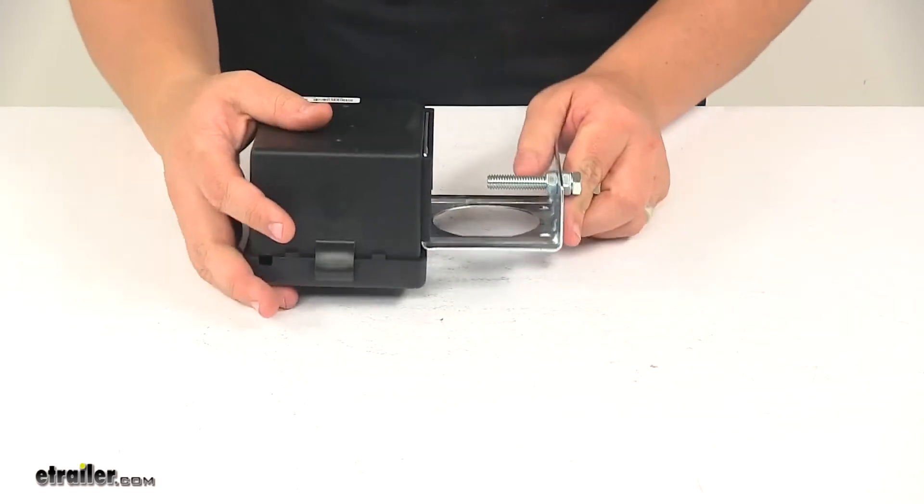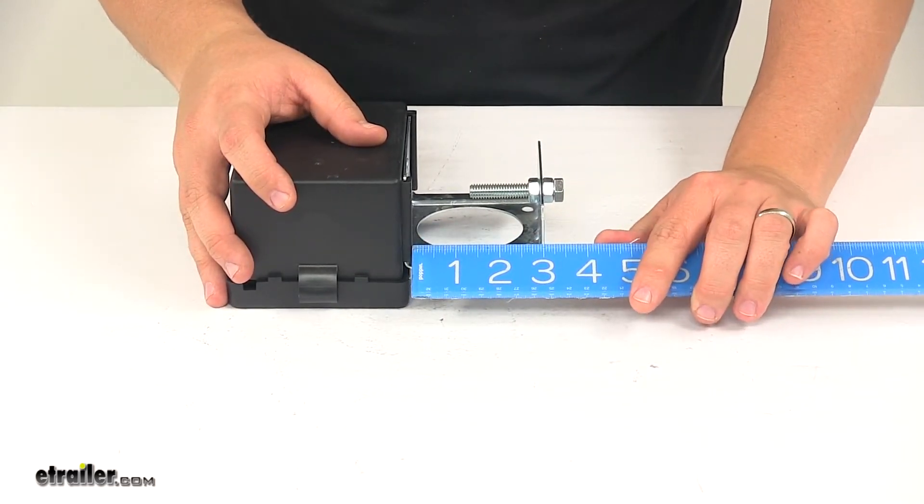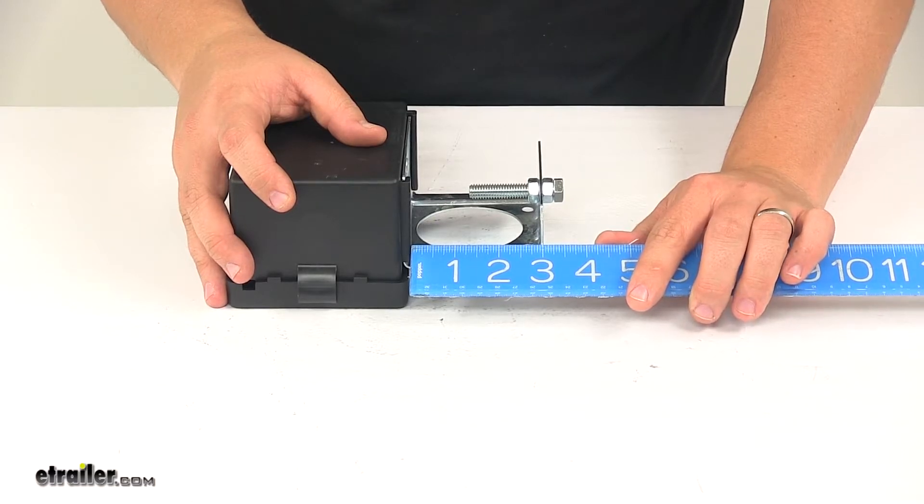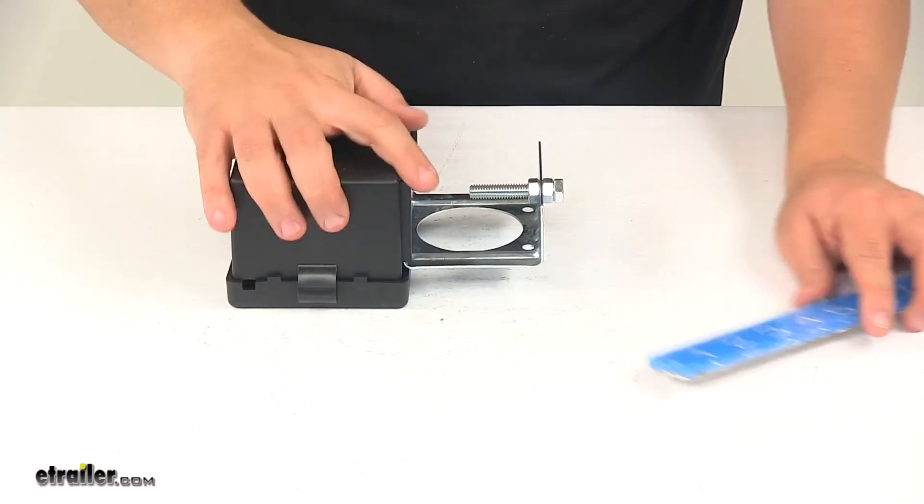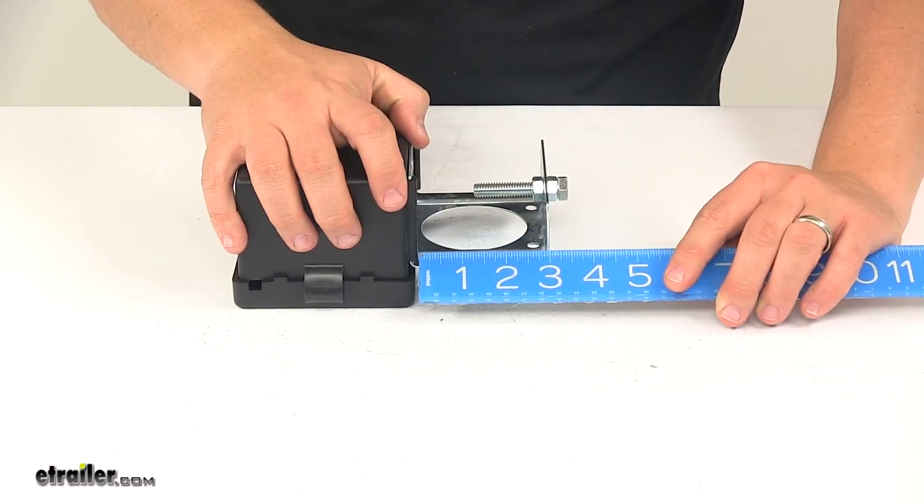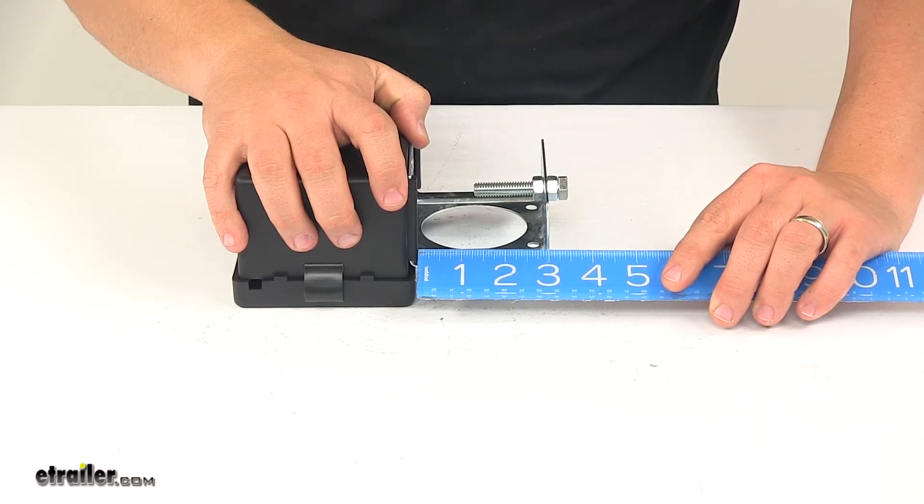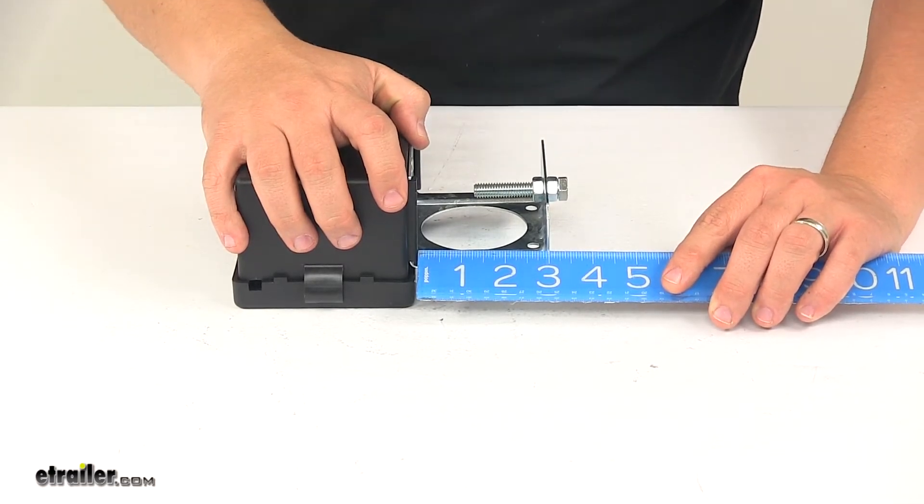When it comes to the clamp, that space right there from the back of the box to the L portion of the clamp, or of the bracket, measures about two and seven-eighths of an inch.